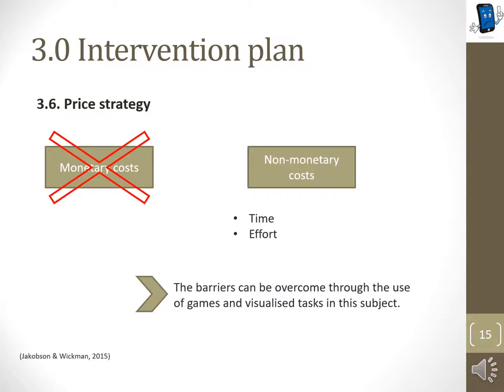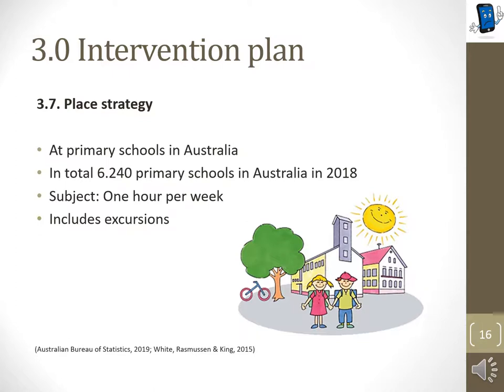This intervention is implemented in primary schools in order to reach the target audience effectively. The subject is taught in all 6,240 primary schools in Australia for one hour per week by trained teachers. The reason for creating a subject for primary school children is that they tend to listen to teachers more than to their parents. Parents' rules are only respected for a short time but have no long-term perspective and lead to reactance. Apart from the lessons, this subject includes excursions to companies or sport clubs, where children will discover the benefits of doing sport.